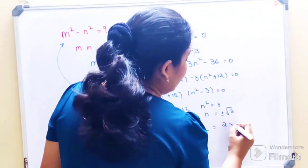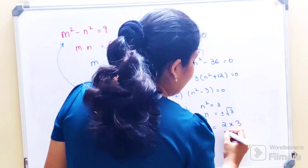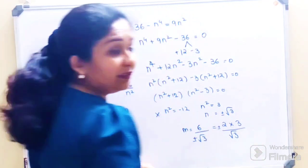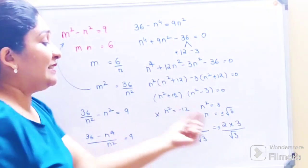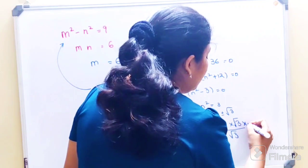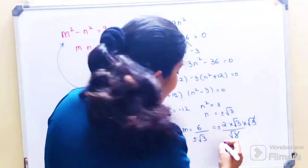I can write this as nothing but what, 2 into 3 upon plus minus root 3. The plus minus can go on top. Now understand, this single 3 can also be written as what? Root 3 into root 3. So this cancels.